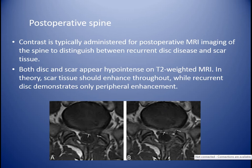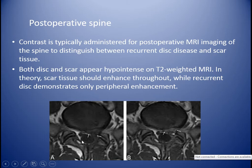Post-operative spine: contrast is used in cases of infection and post-operative spine to distinguish between recurrent disc and scar tissue. Both disc and scar tissue appear hypointense on T2-weighted MRI. In theory, scar tissue should enhance throughout, while recurrent disc demonstrates only peripheral enhancement.